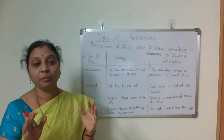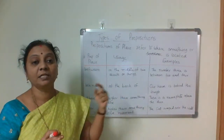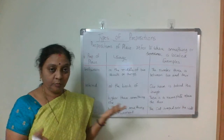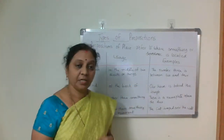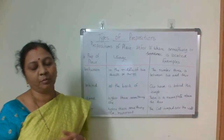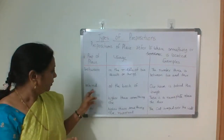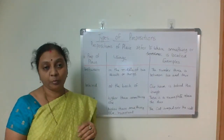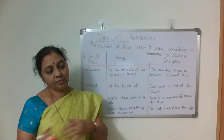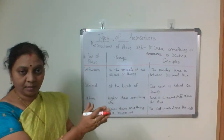Next: 'between'. It talks about the middle of two things — in the middle of two persons or two objects. For example: 'The number three is between two and four.' 'He sat between Ram and Sam.' — two people are there, and he sat in between. So 'between' means in the middle of.